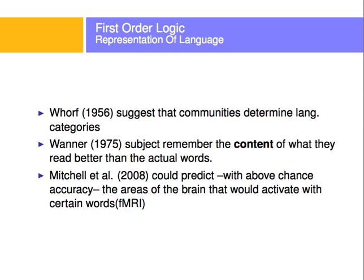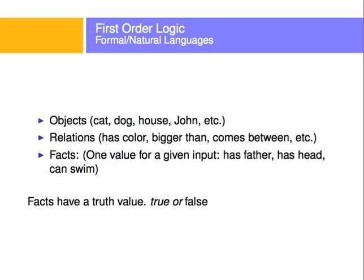With that in mind, we're going to choose a way to represent language. We know that there are objects — cat, dogs, house, John, etc. We know the relations: the cat has color, the house has color, the house is bigger than or smaller than, one comes between zero and two, etc. These are relations that relate two or more objects together. And then there are facts, which are one value for a given input — for example, that John has a father, John has a head, John can swim.